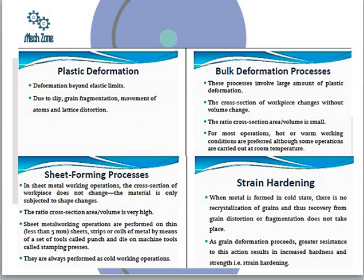Strain hardening is a phenomenon we understand from strength of materials. As strain increases, the corresponding stress does not increase proportionally, making the material harder. As grain deformation proceeds, greater resistance to further deformation results in increased hardness. Slipping and twinning of atoms occur against resistance, strain increases excessively, and ultimately hardness and strength also increase. This is the formula and phenomenon of strain hardening.